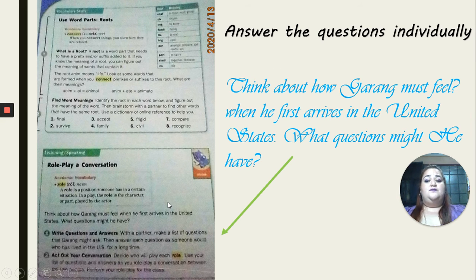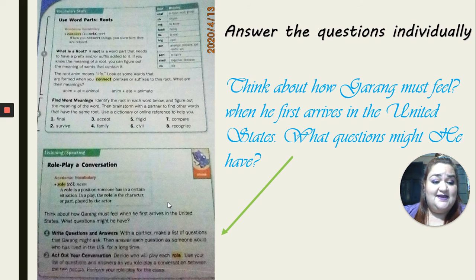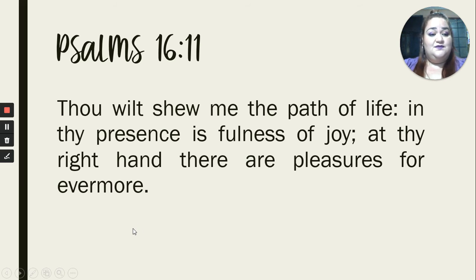Then we have this role-play conversation. Practically in this, you're not going to be working with a peer, you're not going to be working with someone else, so you're going to do it individually. You have in there one question. Please, think about how Garang must feel when he first arrived in the United States. What questions might he have? That is the only thing you have to do in there. Answer the main question that is in there, and it says with a partner, but remember, you're working it by yourself.